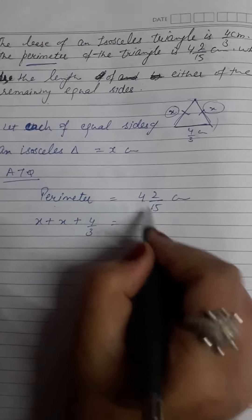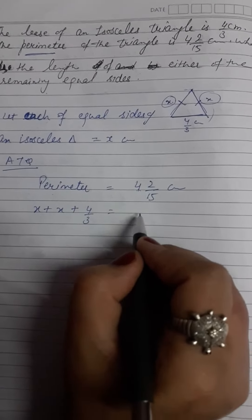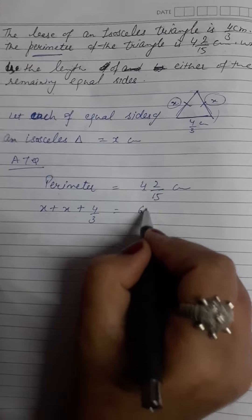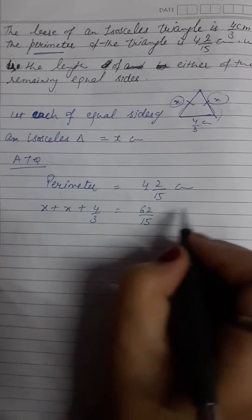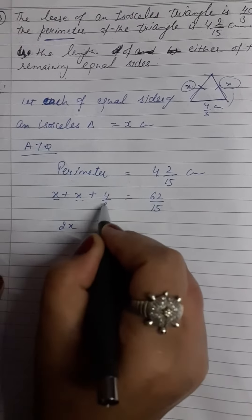This is in mixed fraction, so change to improper fraction. 15 fours are 60, 60 and 2 is 62 by 15 cm. So now x and x becomes 2x plus 4 by 3.